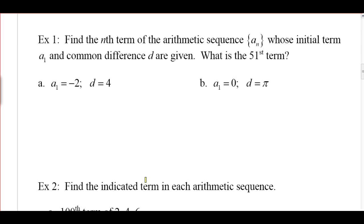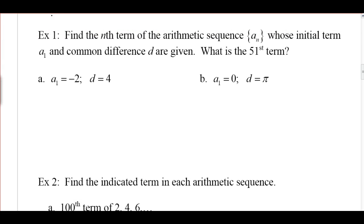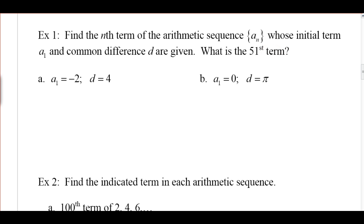Moving on to the examples — some of these I'm going to work out in the video, and some of them I'm going to have you work out on your own and then we'll talk about them in class. For example one, we want to find the nth term of an arithmetic sequence a sub n whose initial term a sub 1 and the common difference d are given, and we also want to find the 51st term. We're going to find a recursive and explicit formula.